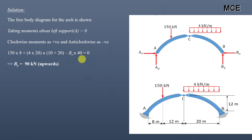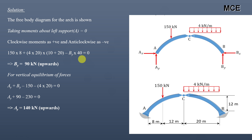From the moment equation, the value of By is calculated as 90 kN upward. Since the value is positive, the assumed direction is correct. Next, taking vertical equilibrium: Ay + By − 150 − 4 × 20 = 0, assuming upward forces are positive and downward forces are negative. Substituting By = 90: Ay + 90 − 230 = 0, giving Ay = 140 kN upward, confirming the assumed direction.